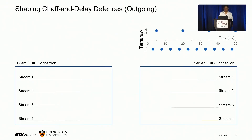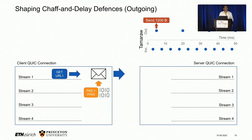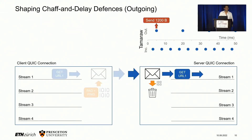Let's consider a second type of defense: chaff and delay defenses. These defenses, in addition to adding chaff traffic, also reshape the flow of application data — for example, by delaying it. An example is Tamaraw, which we'll be using for this demonstration. When the defense indicates that data should be sent from the client to the server, since QCSD is now blocking the client from sending by default, it first checks whether there is data pending at the client to be sent. It creates a packet with that data — or multiple packets if the amount exceeds the MTU of the link — and pads this using padding and ping frames, which it then sends to the server. The server removes this padding information, discards it as per the QUIC protocol, and forwards the application data to the actual stream.